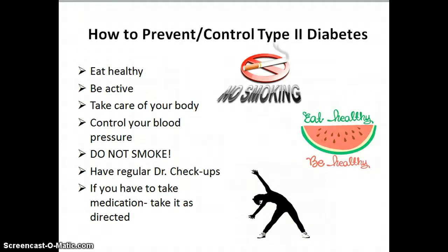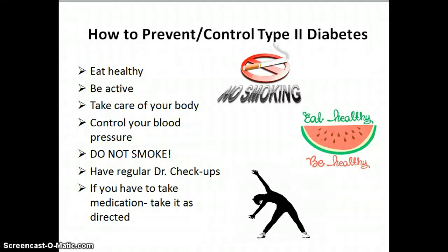More importantly, how do you prevent or control type 2 diabetes? We must start with eating healthy and being active. Control your blood pressure, do not smoke, and make sure that you have regular doctor checkups. And if you have to take medication, take it as directed.